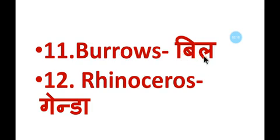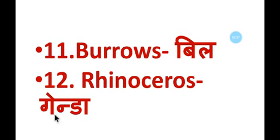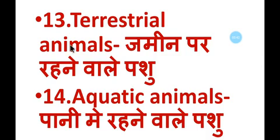Bill mein kone ratte hain, snake, rat. Number twelve: rhinoceros — r-h-i-n-o-c-e-r-o-s — rhinoceros means genda. Number thirteen: terrestrial animals.